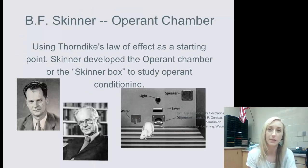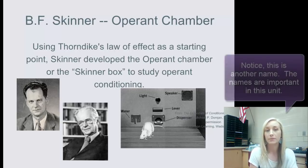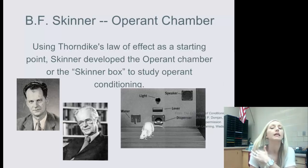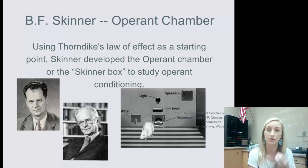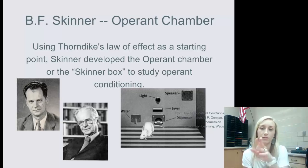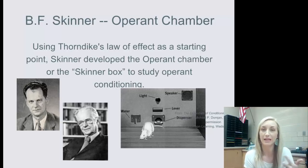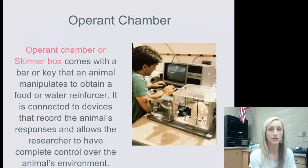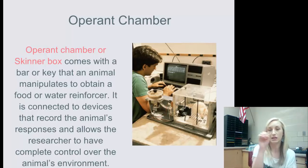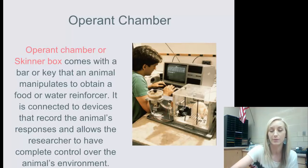B.F. Skinner coined operant conditioning using what he called the operant chamber. He used Thorndike's law of effect as a starting point and developed the operant chamber — also called the Skinner Box — to study operant conditioning. He used it with mice where a certain combination of actions, like pressing a lever or responding to a light, had to be performed to be rewarded with sugar water. Each time the mouse got the correct combination right, that behavior was strengthened. The Skinner Box is connected to devices that record the animal's responses and allow complete control over the environment.